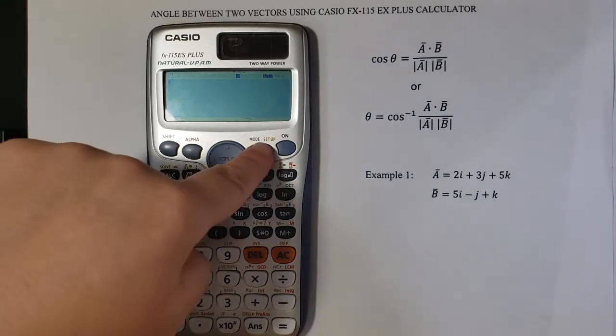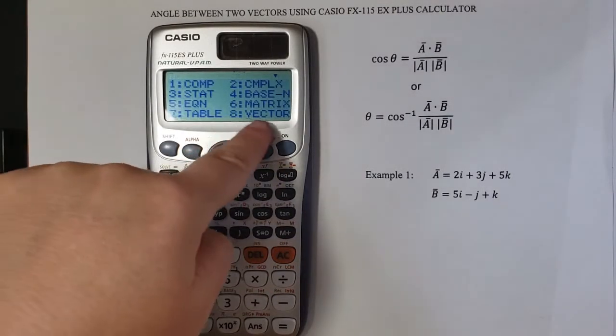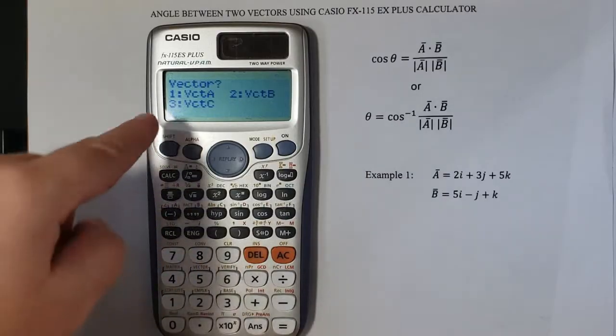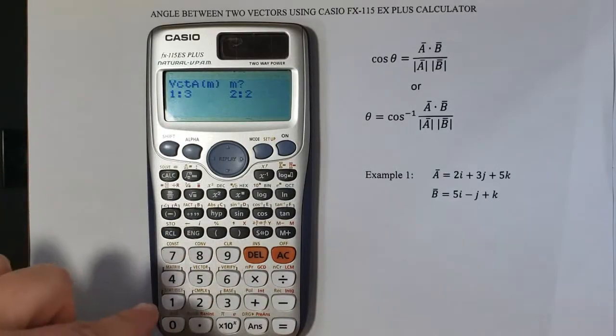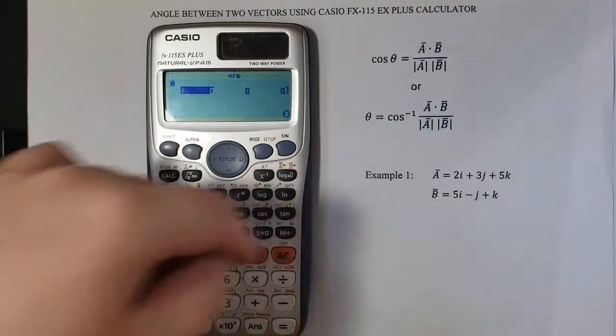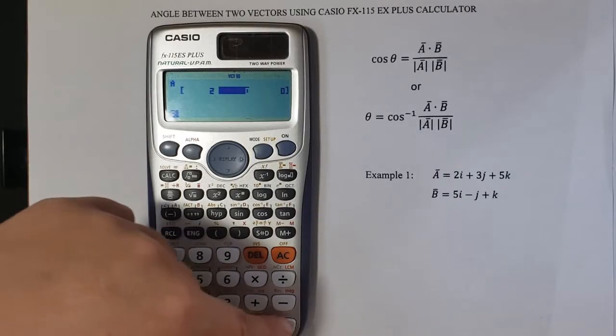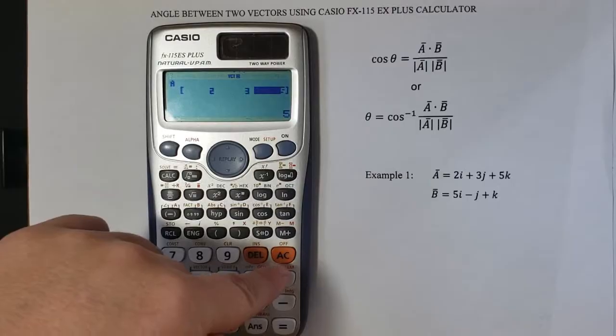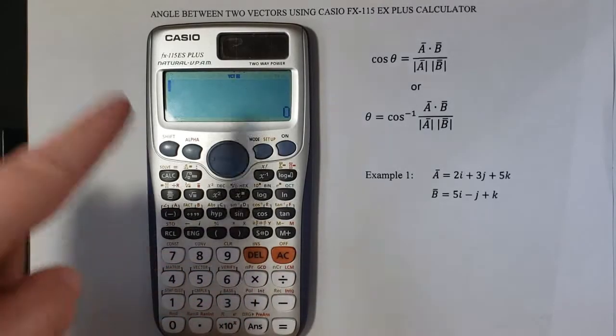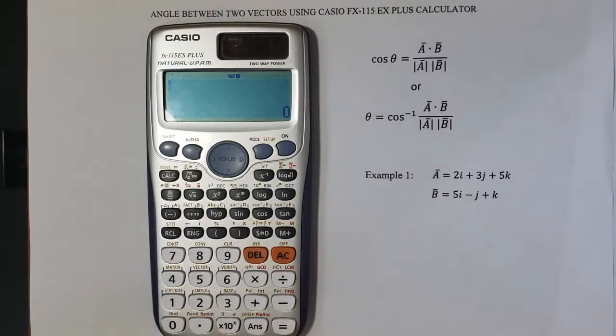I will go to mode here and I will press 8 for vector and 1 for vector A and then 1 again for the three directions of the vector. 2 equal, 3 equal, 5 equal. I will press the all clear button here in order for the calculator to save these values.